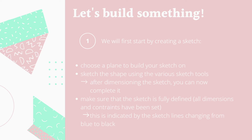You need to make sure that your sketch is fully defined before you exit the sketch. To do that, you need to make sure that all of the dimensions are defined and also that you have set all the constraints between the lines — for example, making lines parallel or perpendicular to one another. You'll know your sketch is fully defined if the lines have turned from blue to black.